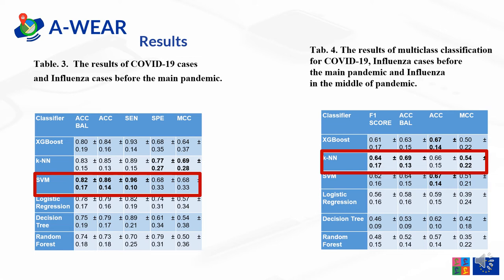77% of the COVID cases were correctly confirmed by the KNN algorithm. Moreover, we carried out multi-class classification for recognition between COVID-19 cases, influenza before, and influenza in the middle of the pandemic. For this process, we evaluated the performance of the classifier using F1 score, balanced accuracy, accuracy, and MCC, where F1 score is the harmonic mean of precision and recall. The highest results for F1 score were registered for KNN at 64%. The same situation was observed for balanced accuracy at 69% and MCC. The highest accuracy was achieved for XGBoost and SVM at 67%.